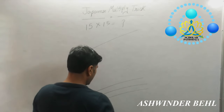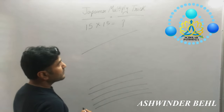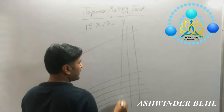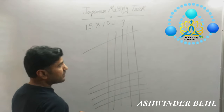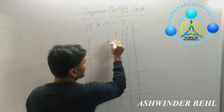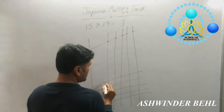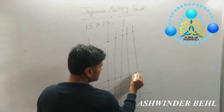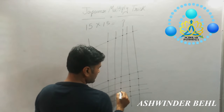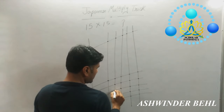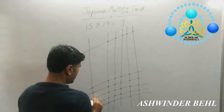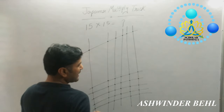So you will draw 5 lines: 1, 2, 3, 4, 5. And the next digit is 1, so you will draw only 1 line. Now you can make a point where two lines are intersect, and make a semicircle this way and this way.